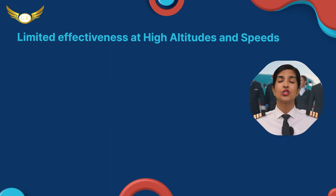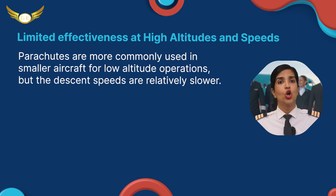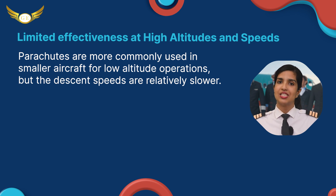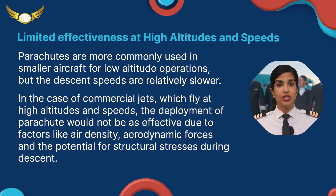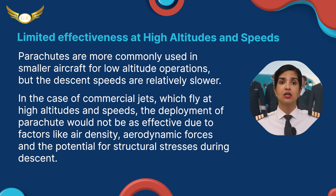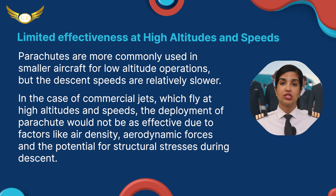3. Limited Effectiveness at High Altitudes and Speeds. Parachutes are more commonly used in smaller aircraft for low altitude operations where descent speeds are relatively slower. In the case of commercial jets, which fly at high altitudes and speeds, the deployment of a parachute would not be as effective due to factors like air density, aerodynamic forces, and the potential for structural stresses during descent.